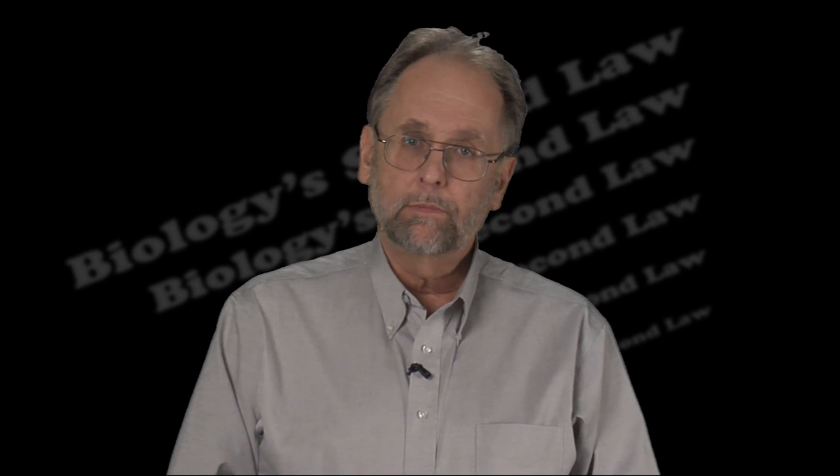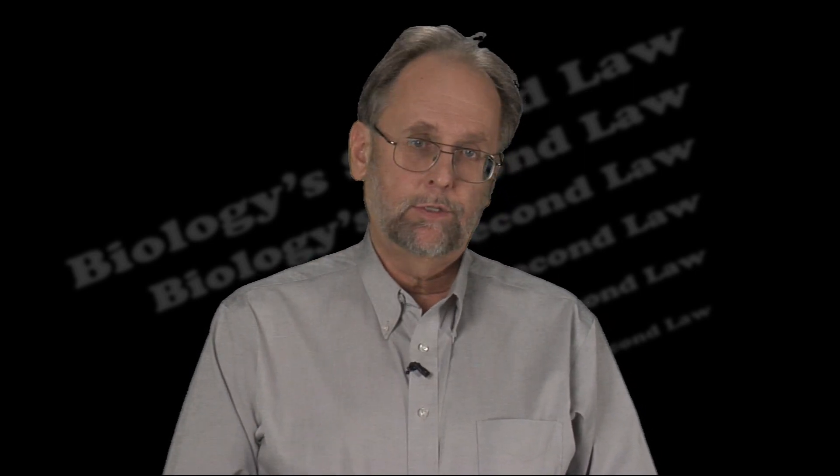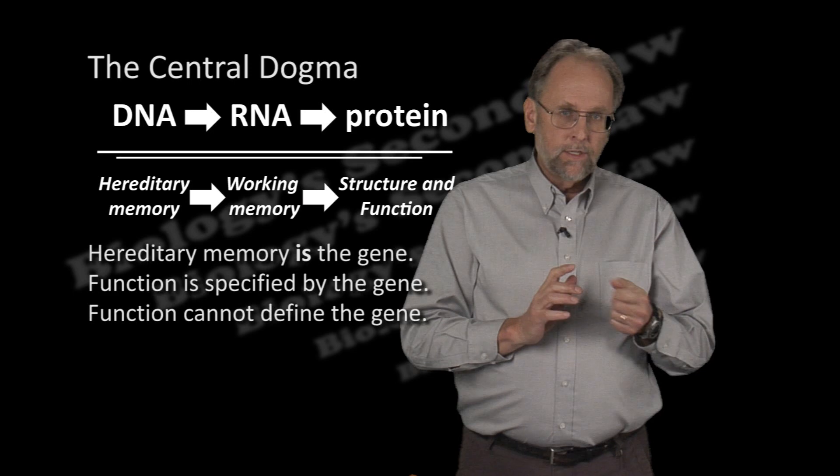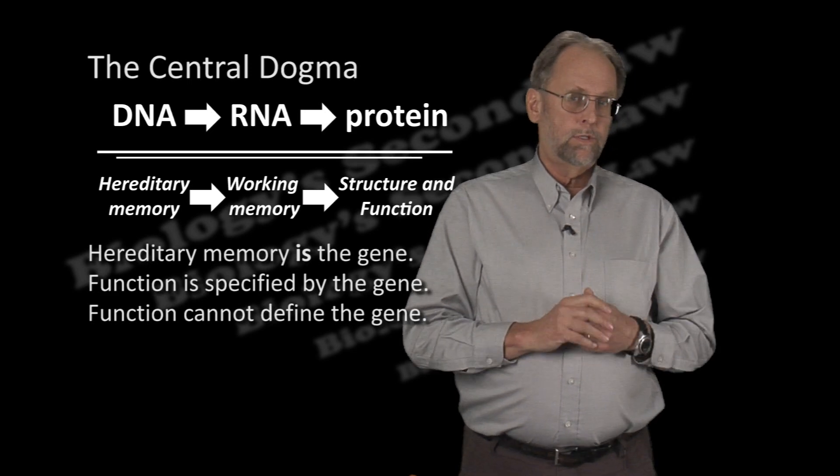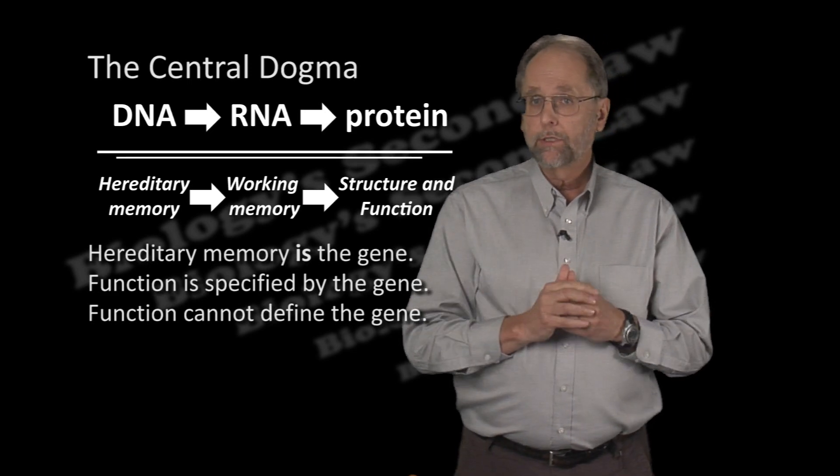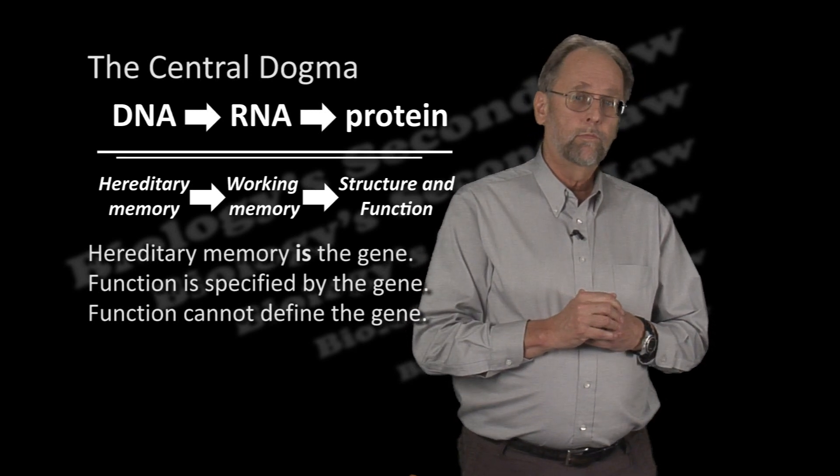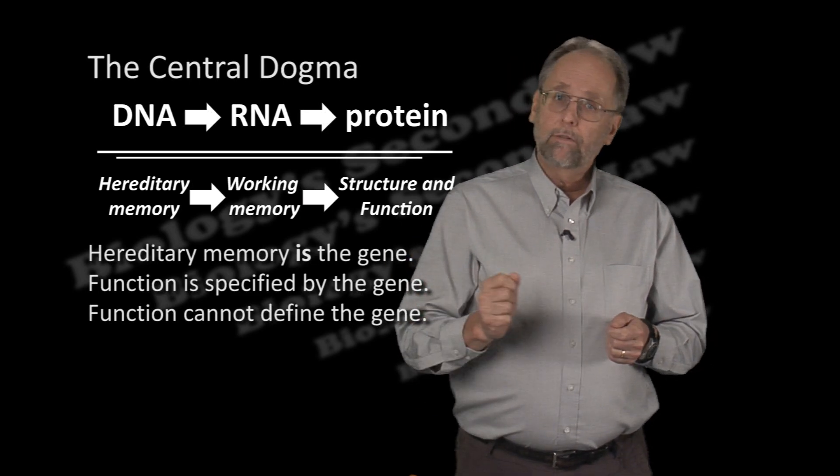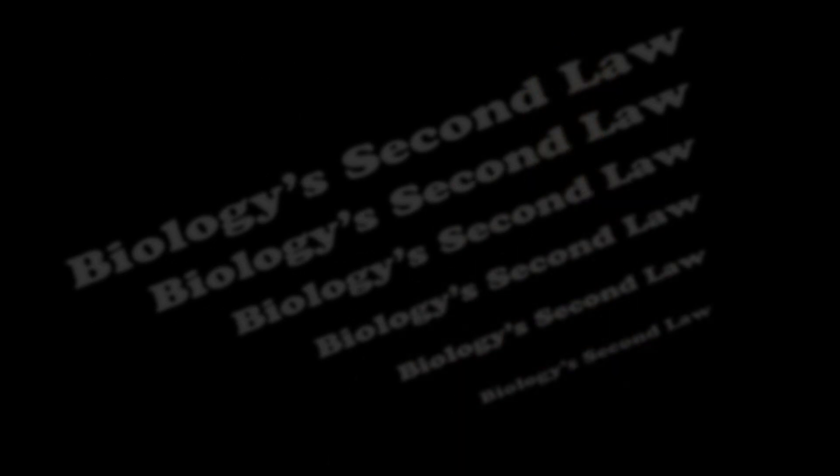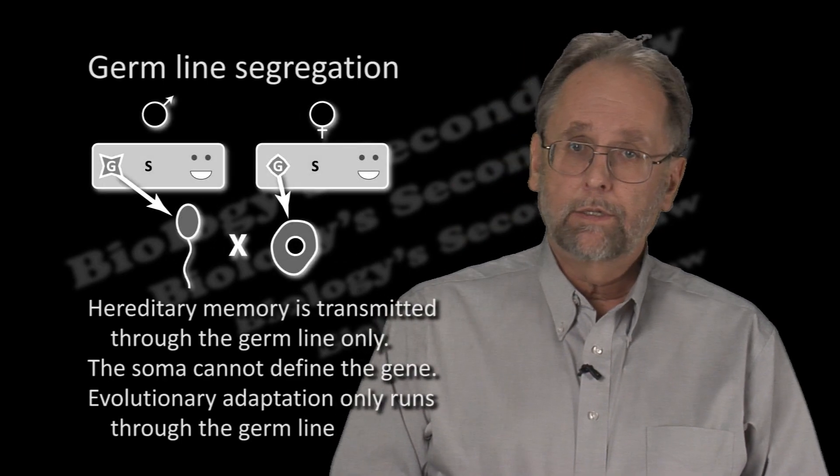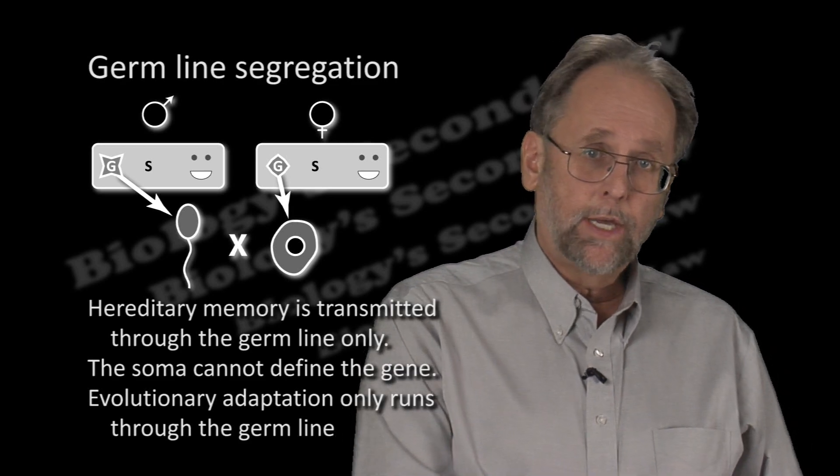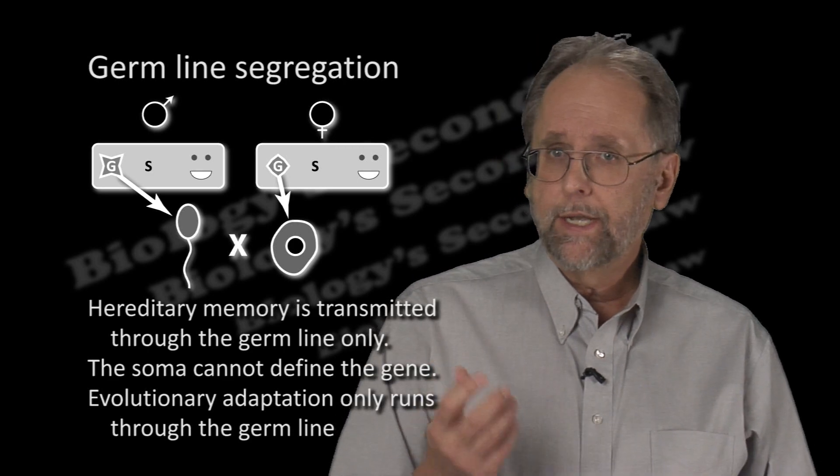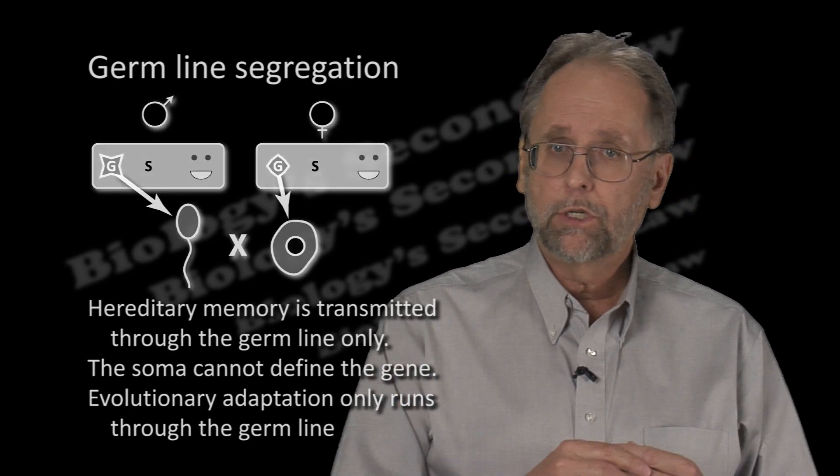So by the conventional wisdom, Lamarck is discredited on three major grounds. First there's the central dogma of molecular biology. This designates the gene as the sole repository of hereditary memory, and as the ultimate specifier of function in the living organism. Function, adaptive or not, can only stream from the gene, and there can be no feedback of function onto the gene. The second is the segregation of genes residing in the germline from genes residing in the soma. This means that any change in the soma, whether it's physiological or genetic, cannot feedback and modify genes in the germline.